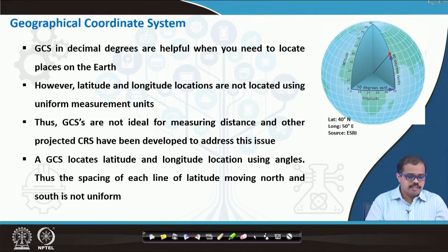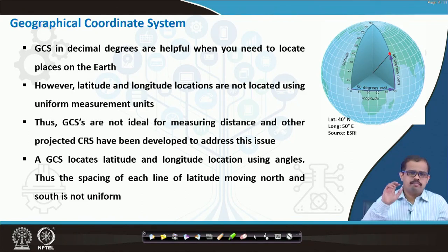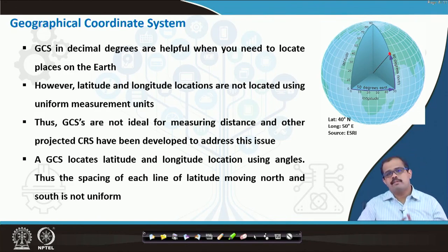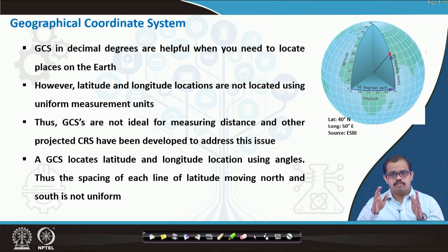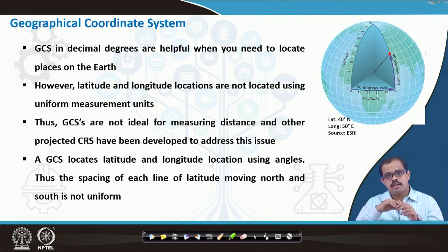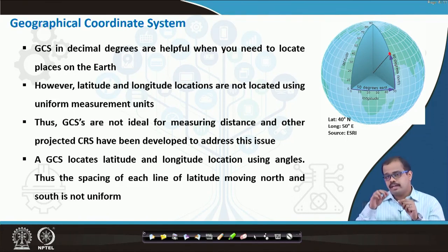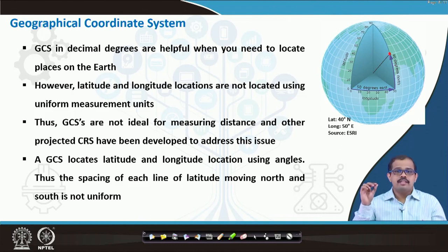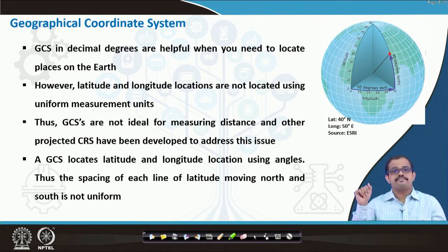GCS is normally in decimal degrees and is helpful when you need to locate a place on the earth. A good example many of you have used is Google Maps. When you hover over a place that has no label, it shows the X and Y of that particular place in degree decimals or in degrees, minutes, and seconds. That is what I am speaking about — the GCS system.